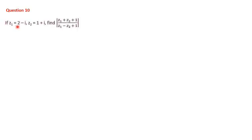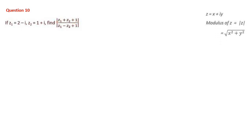Moving on to question number 10: If z1 = 2 - i and z2 = 1 + i, find the modulus of (z1 + z2 + 1)/(z1 - z2 + 1). The modulus formula for a complex number x + iy is √(x² + y²).